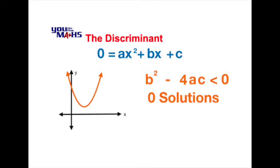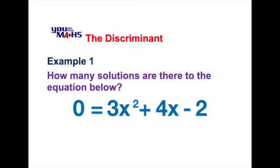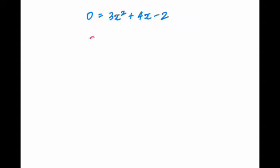Let's look at an example. We're asked how many solutions there are to the quadratic equation 0 equals 3x squared plus 4x minus 2. Since we have a quadratic expression equal to 0, we can use the quadratic formula: x equals negative b plus or minus the square root of b squared minus 4ac, all over 2a.